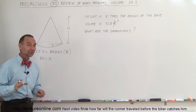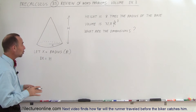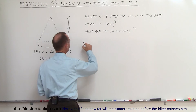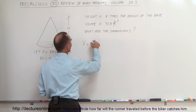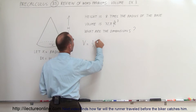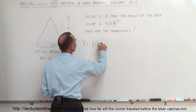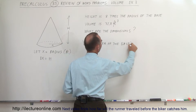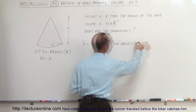We need an equation for the volume of a cone. It turns out that the volume of a cone is equal to one-third the area of the base times the height.